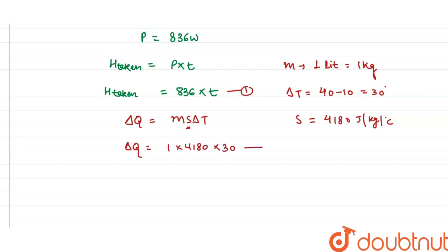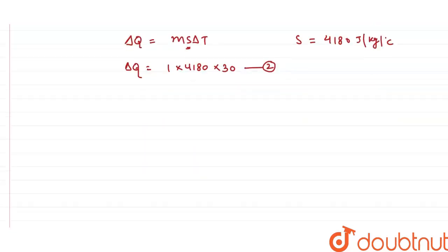Now from the principle of calorimetry we know there is no heat loss, no heat gain, heat released equals the heat absorbed. So I can write equation 1 equals equation 2, because equation 1 is heat taken from the heater and the same amount of heat is used by the water to increase its temperature, so both heats are equal.